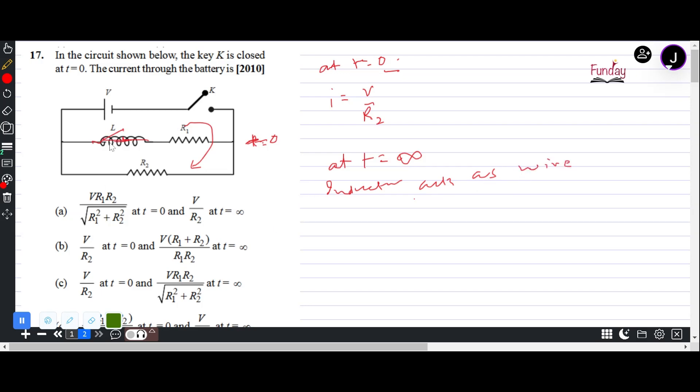1 by R equivalent is 1 by R1 plus 1 by R2, which equals R1 R2 by R1 plus R2. And i equals V by R, so V by R1 R2 over R1 plus R2 is V times R1 plus R2 by R1 R2.